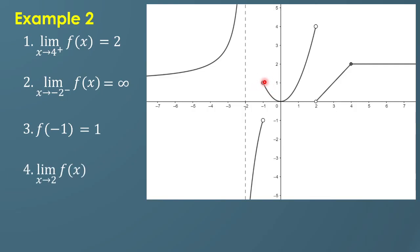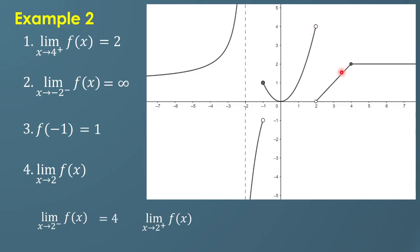For the limit of f of x as x approaches 2, this is x equals 2. Getting the left-hand side limit, the y values get closer to 4. For the right-hand side, the y values get closer to 0. Since the left-hand side limit is not equal to the right-hand side limit, the limit does not exist.